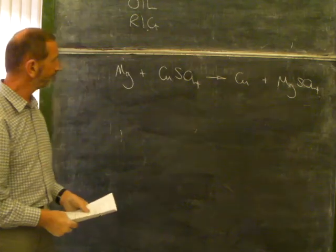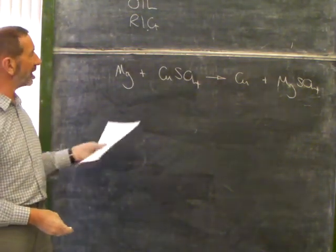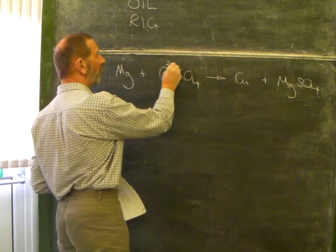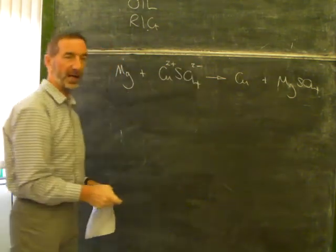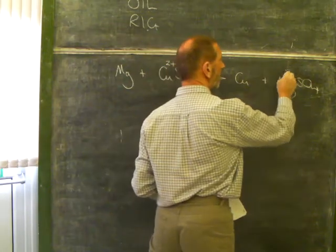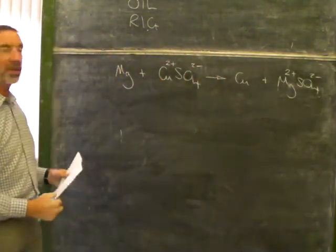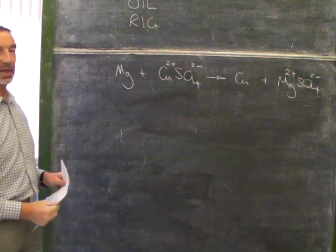The more reactive magnesium kicks out the copper and takes its place. So the copper gets kicked out. And instead of copper sulfate, we now have magnesium sulfate. What's really going on? It would help if we put in some charges.